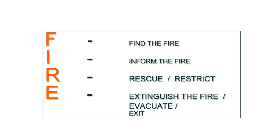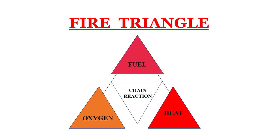What is fire? The F defines 'find the fire,' I means 'inform the fire or rescue or instruct,' E means 'execute the fire or evacuate or exit.' The fire triangle considers three main elements: fuel, oxygen, and heat. The fourth one is chain reactions.